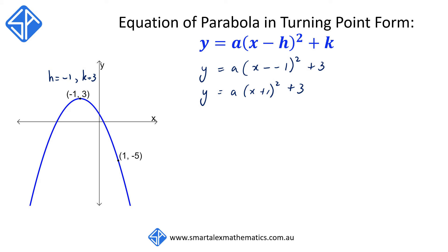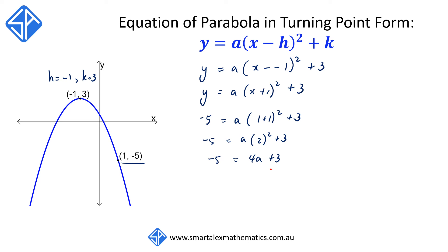To find a, we're going to use the point (1, -5) and substitute it into the equation. So we have -5 = a(1 + 1)² + 3, which gives -5 = a(2²) + 3, so -5 = 4a + 3. Subtracting 3 from both sides, we have -8 = 4a. Then dividing both sides by 4, we get a = -2.